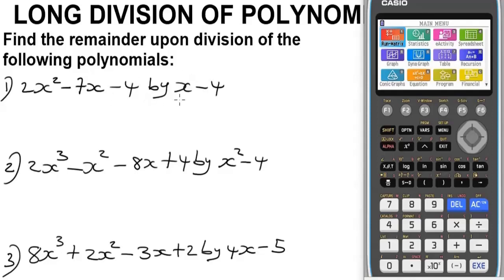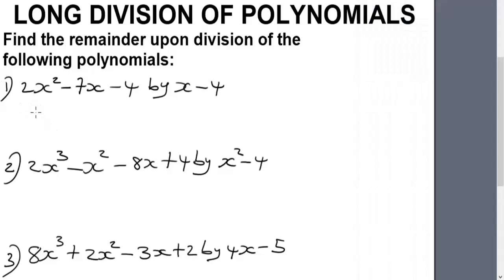Now to find the remainder of these various polynomials we have here, beginning with question one, the idea is to take this divisor that is dividing this dividend. The divisor is x minus 4. You equate it to zero, so this will be x minus 4 equals zero. To make x the subject, this four crosses the equality sign. I'm going to have x equals 4.